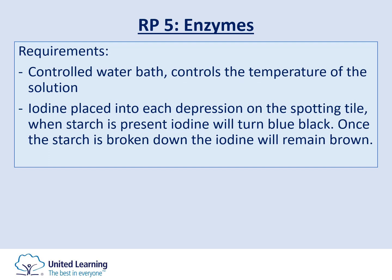We look for which pH values allow the iodine to stay brown, indicating amylase has successfully broken down all the starch. To control the experiment, temperature is kept constant using a water bath, ensuring we isolate the independent variable — pH. Iodine is placed in each depression on the spotting tile; if starch is present it turns blue-black, and once starch is broken down the iodine remains brown.